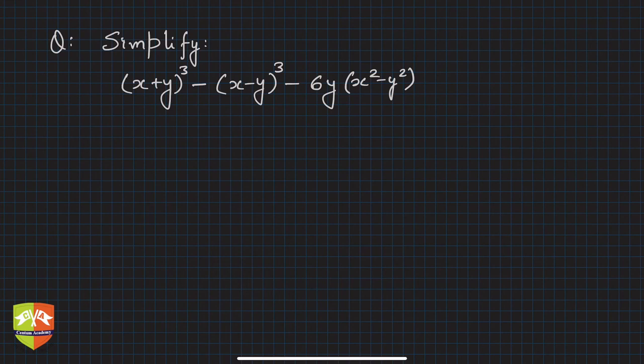Hey, welcome friends once again to this session on factorization of algebraic expressions. Here's the question: simplify (x+y)³ - (x-y)³ - 6y(x²-y²).